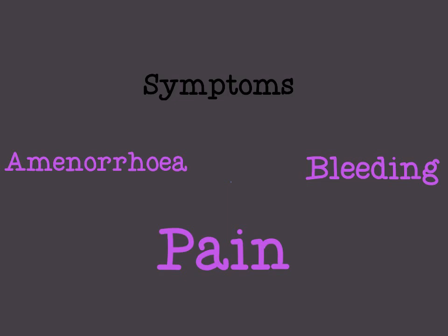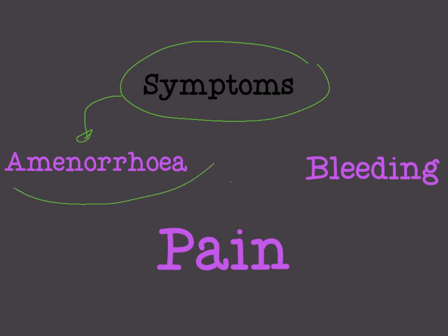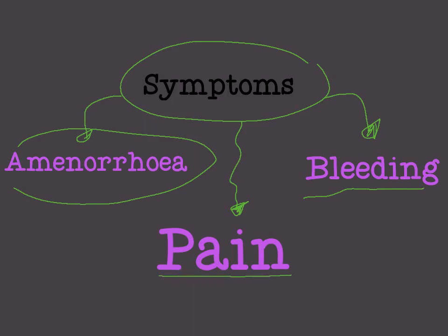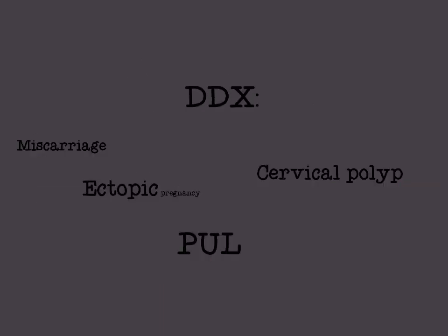The symptoms of miscarriage: first is amenorrhea — miscarriage involves a pregnancy, so we must have amenorrhea. The second symptom is pain, and the third is bleeding. When we defined miscarriage, we said it is vaginal bleeding and/or loss of pregnancy before fetal viability, so vaginal bleeding is required. The three symptoms are: amenorrhea, pain, and vaginal bleeding.